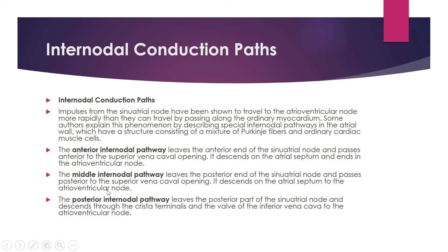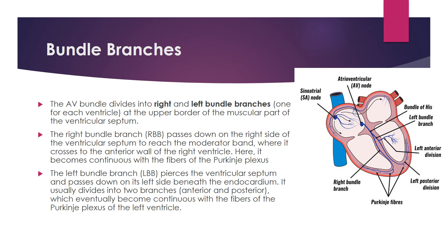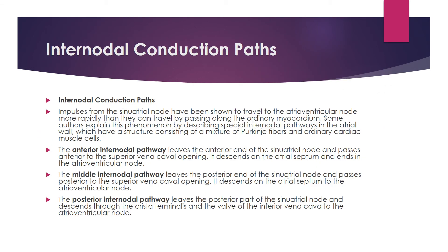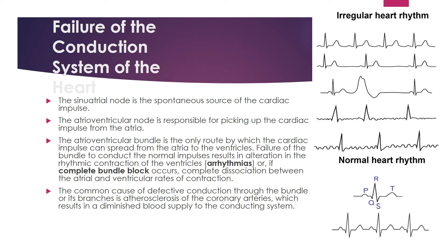The middle internodal pathway leaves the posterior end of the SA node, passes posterior to the superior vena cava opening, and descends on the atrial septum to the AV node. The posterior internodal pathway leaves the posterior part of the SA node and descends through the crista terminalis and the valve of the inferior vena cava to the AV node. The upper two pathways are associated with the superior vena cava opening, and the posterior pathway with the inferior vena cava opening.